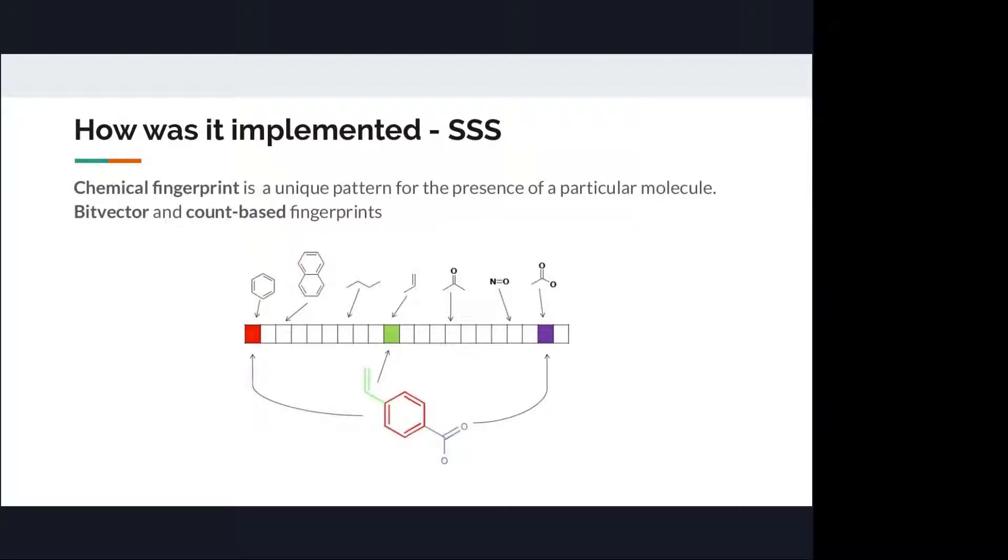The next is substructure search. It is a bit more complex. First of all, I have to define what is a chemical fingerprint. You can think about chemical fingerprint as a hash function that takes your chemical molecule and transforms it into a collection of properties. For example, amount of benzene rings, presence of double benzene ring, etc.